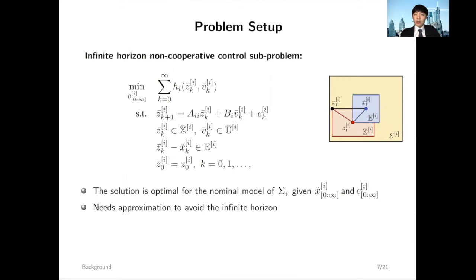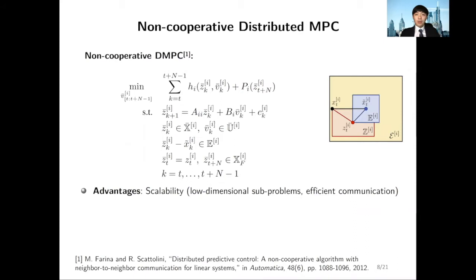With the subsystem partition techniques I just introduced, we can now write down an infinite horizon optimal control problem for each subsystem. In particular, given neighbors' reference trajectories, the only decision variables are the nominal control inputs of subsystem I, and the dynamics are now completely decoupled from the global system. But in general, you need approximations to avoid infinite horizon formulation, because you want finite numbers of decision variables.